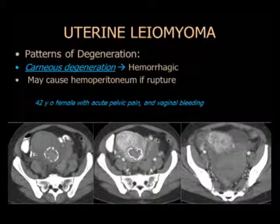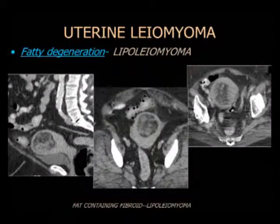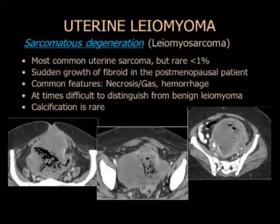Hay otras características de degeneración. La degeneración carnosa se ve en el embarazo. También se observa conversión hemorrágica de los fibromas, con sangre presente, pudiendo haber ruptura y hemoperitoneo en el contexto del dolor pelviano agudo. Puede haber degeneración grasa, que es una característica benigna — clásicamente se llamaría un lipóleiomioma. La degeneración sarcomatosa, por suerte, es rara, incluso en úteros con los fibromas más feos.